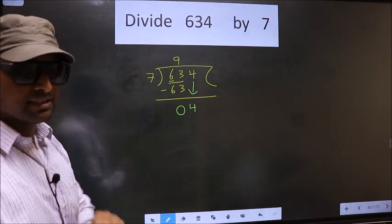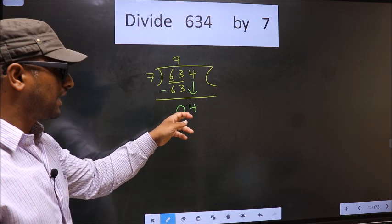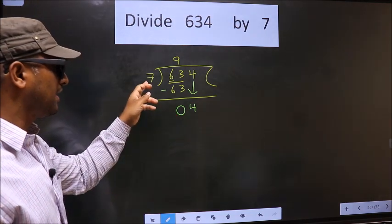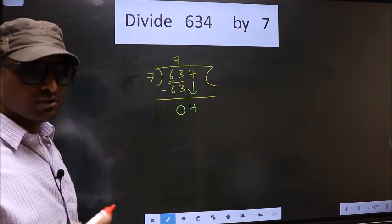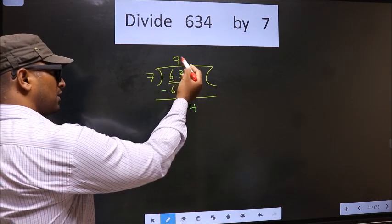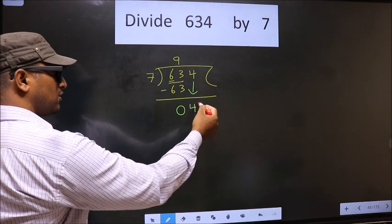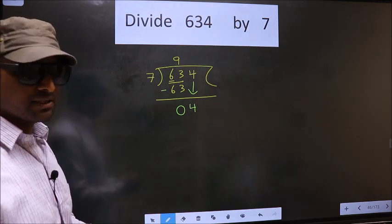And the mistake is this. Here we have 4, and here 7. 4 is smaller than 7. So what many do is, they put a dot and take 0 here. Which is wrong.